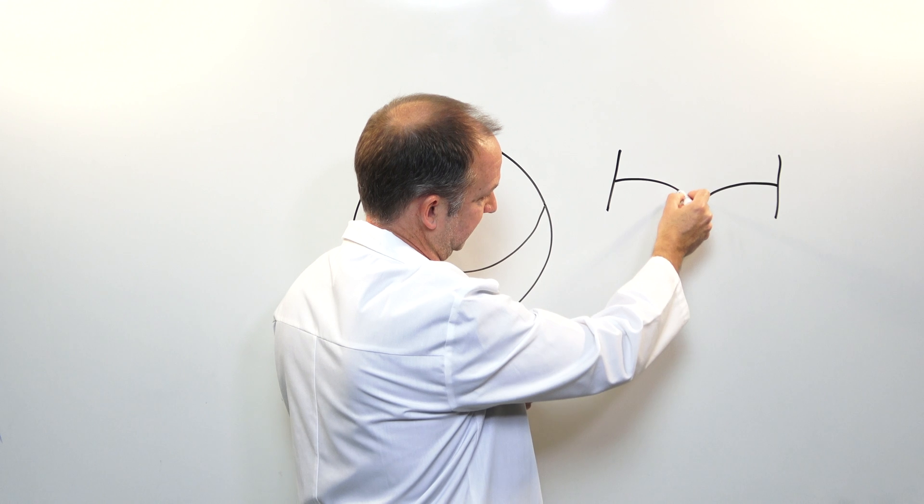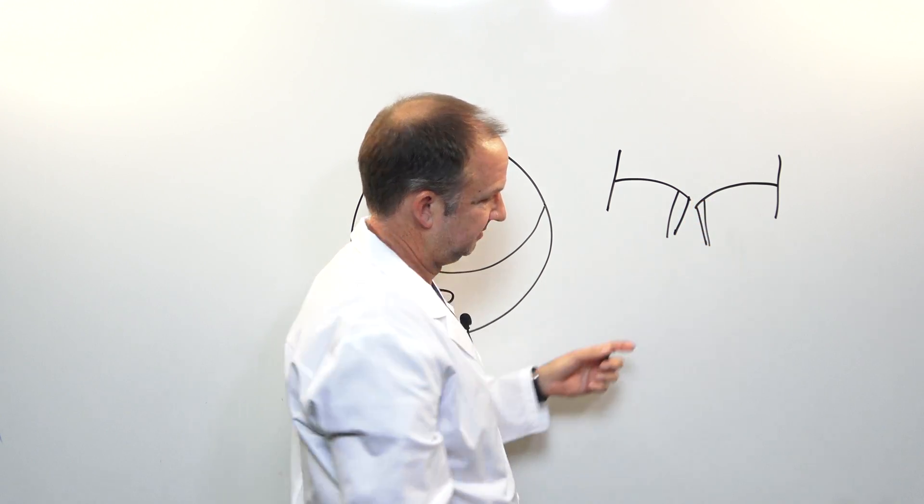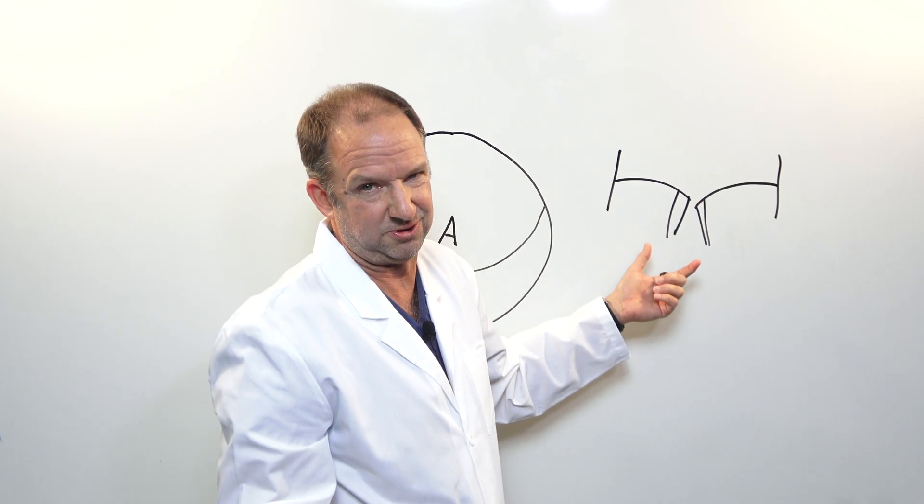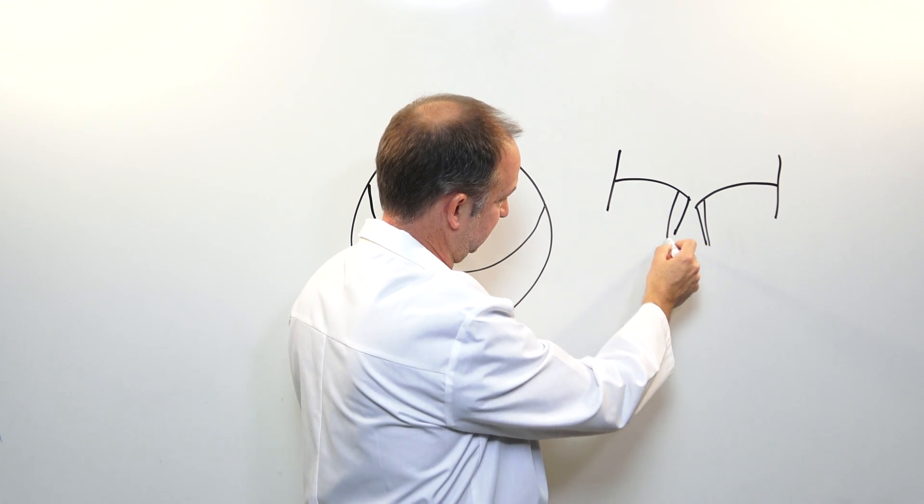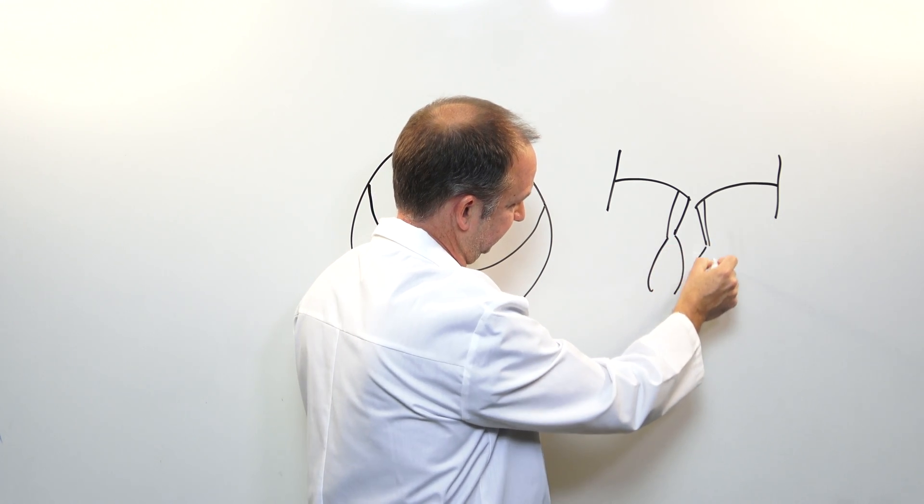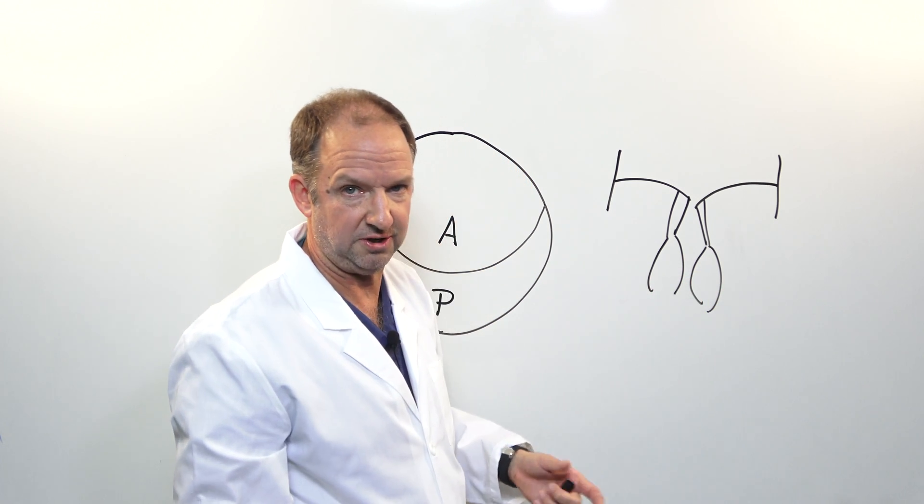And underneath it, it's got these little cords that we happen to call cordae. They're string-like structures. The cordae itself are attached to two muscles. Those muscles we call the papillary muscles.